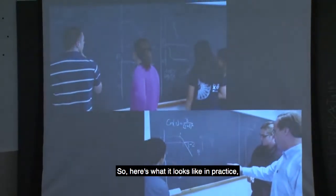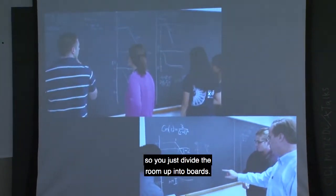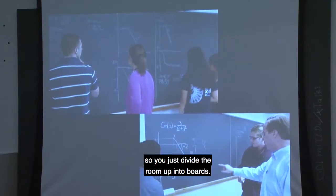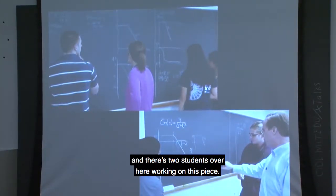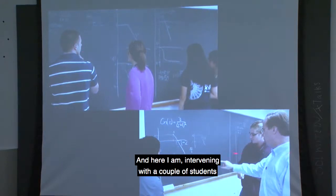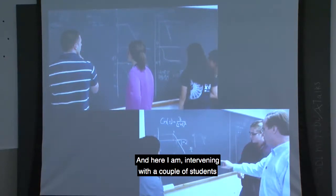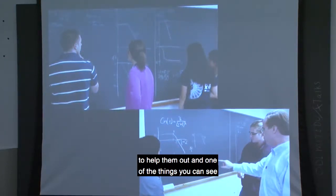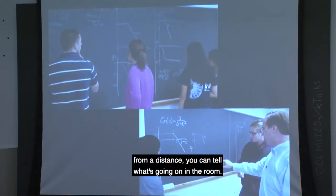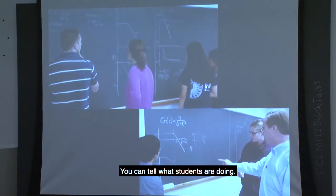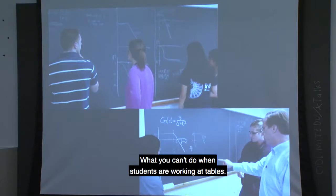Here's what it looks like in practice. You divide the room up into boards — two students working on this piece, two students over here working on this piece, and here I am intervening with a couple of students to help them out. Even from a distance, you can tell what's going on in the room — you can tell what students are doing — which you can't do when students are working at tables.